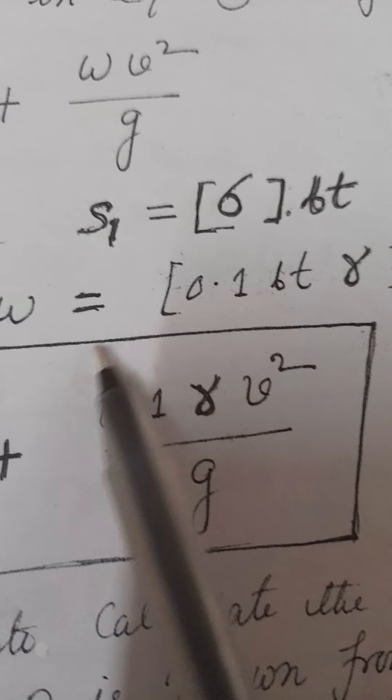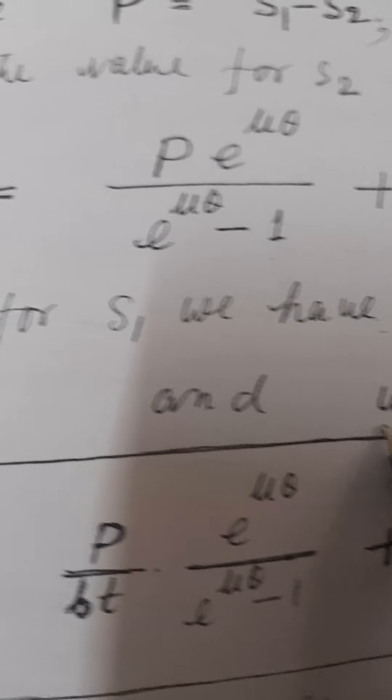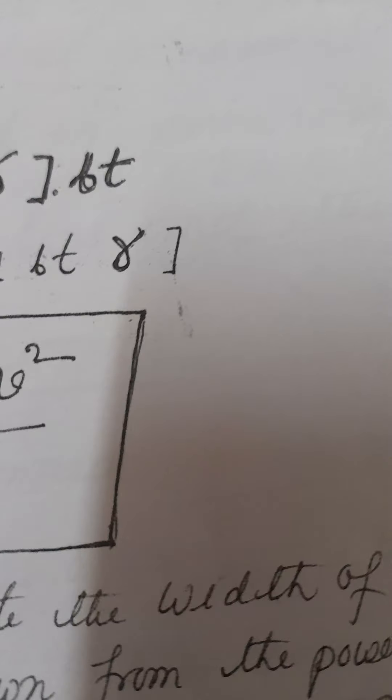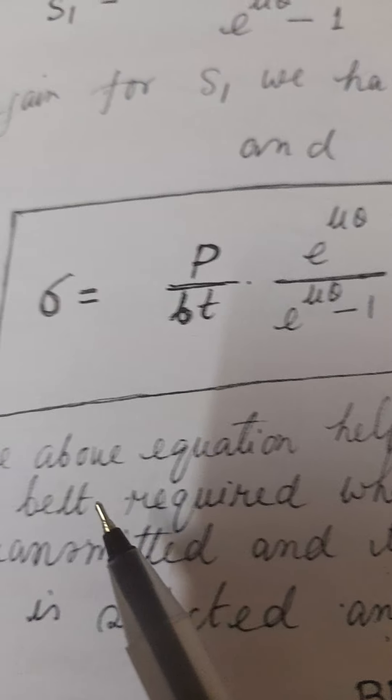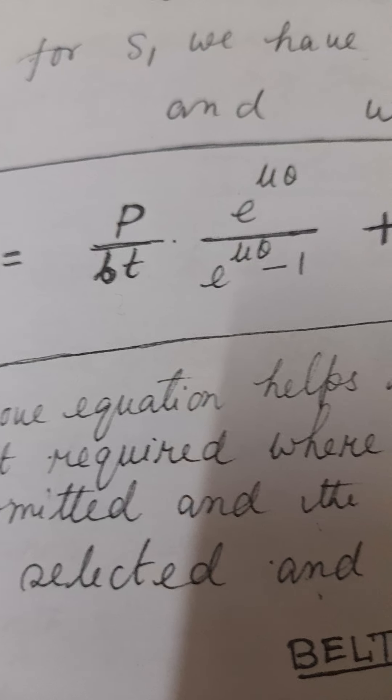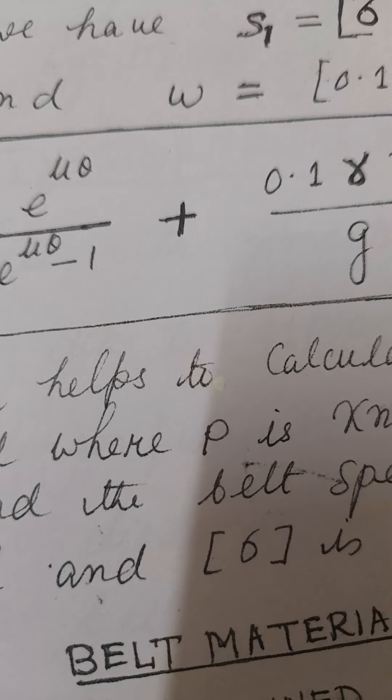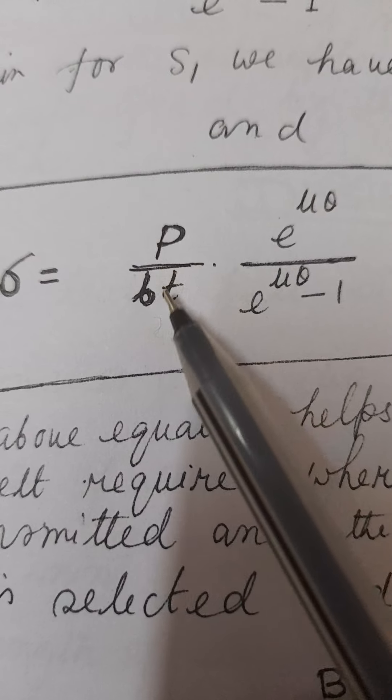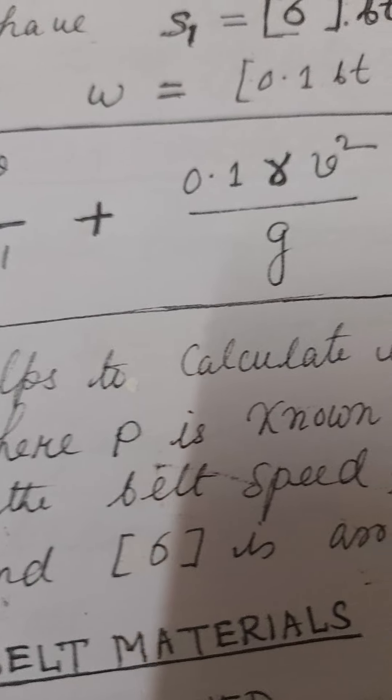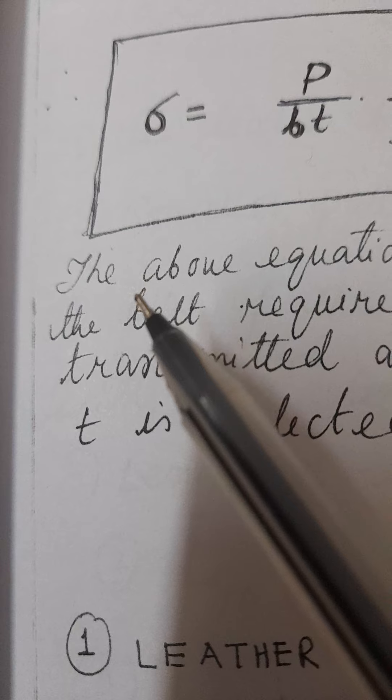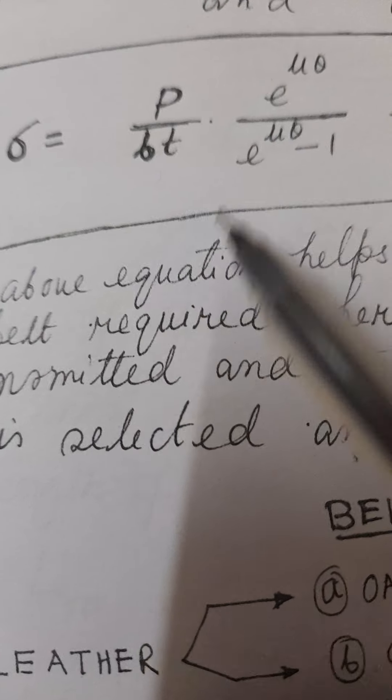Also, w is equal to this. Now, this is the sigma - you can get it in terms of sigma, in terms of P: P by bt. This is the working formula. This is a very important formula.